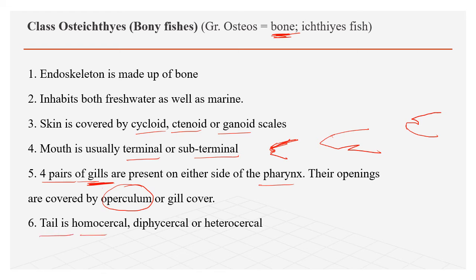They have four pairs of gills covered with an operculum — the gill cover present on either side of the pharynx. Because of this association with the pharynx they are called pharyngeal gill slits. The tail is homocercal — symmetrical externally.